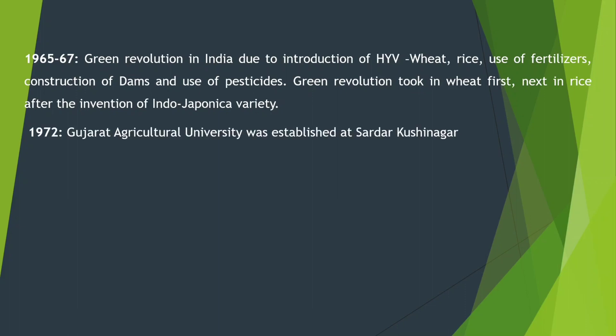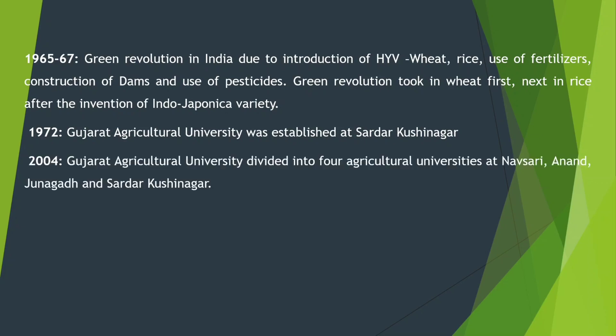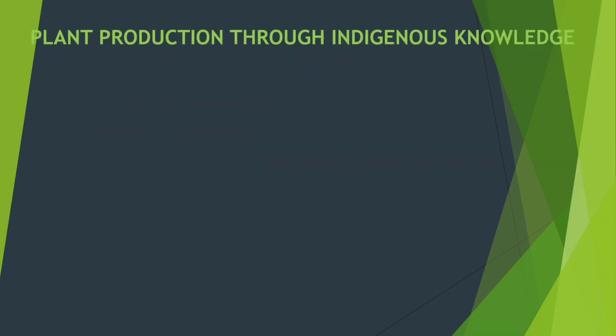In 1972, Gujarat Agriculture University was established at Sardar Krushinagar. In 2004, Gujarat Agriculture University was divided into four agriculture universities: Navsari, Anand, Junagadh, and Sardar Krushinagar.